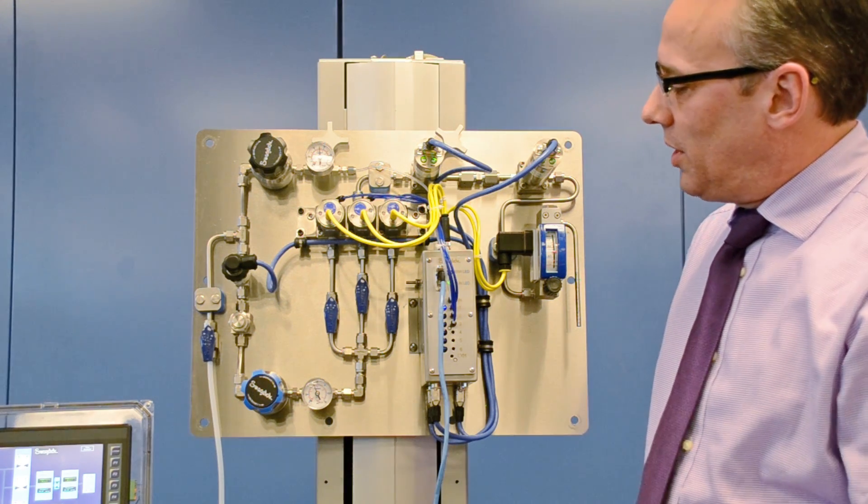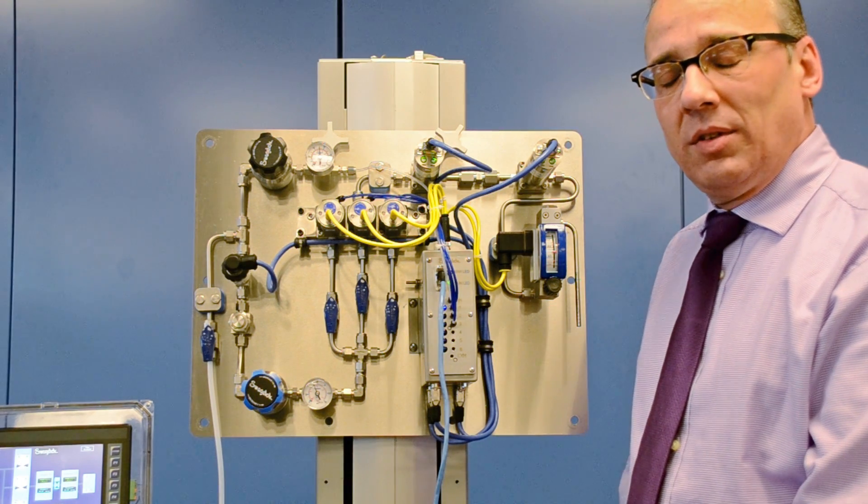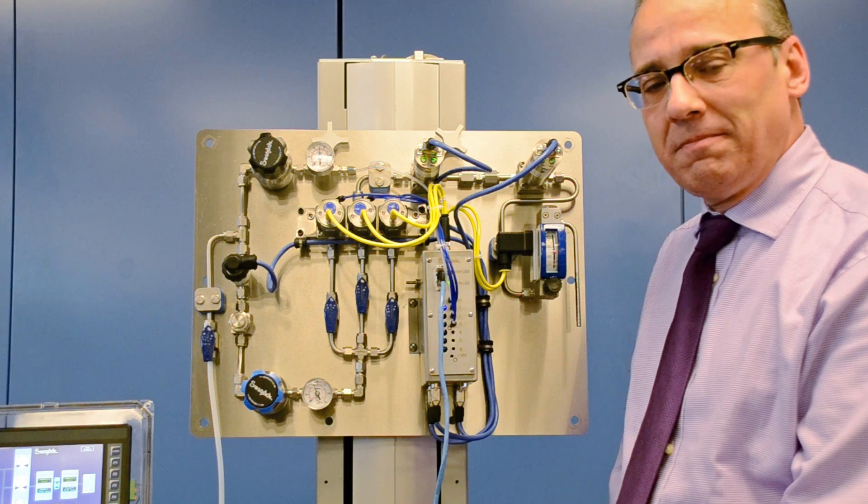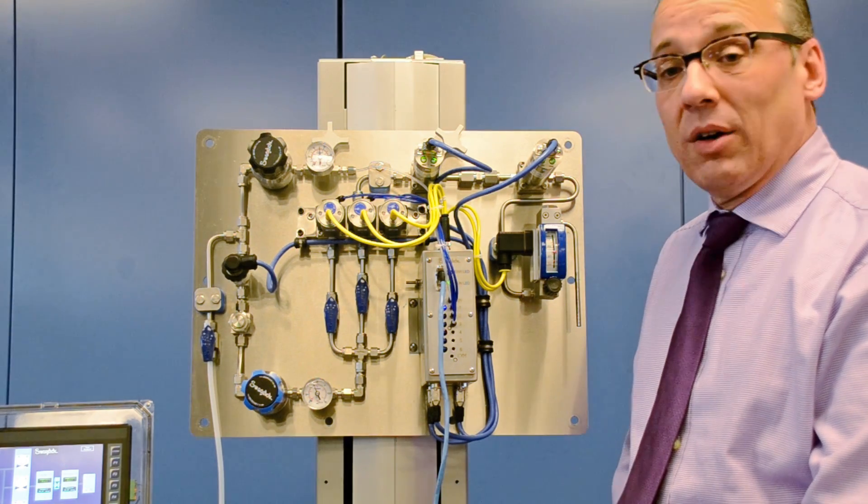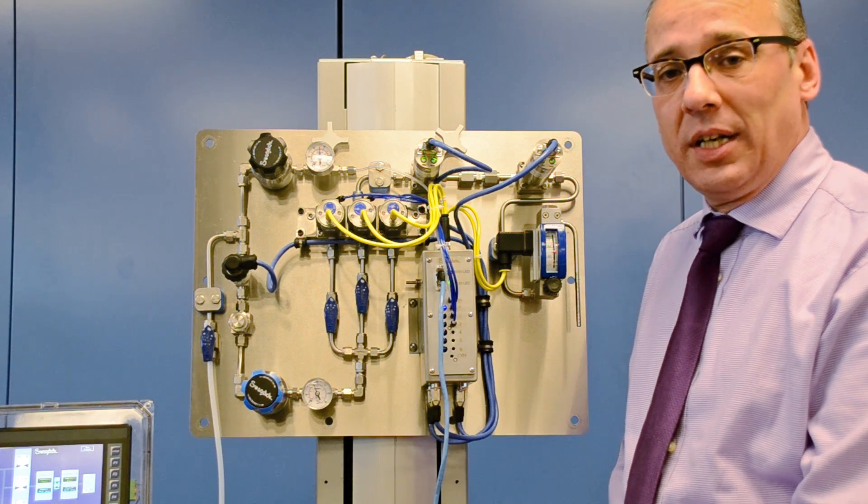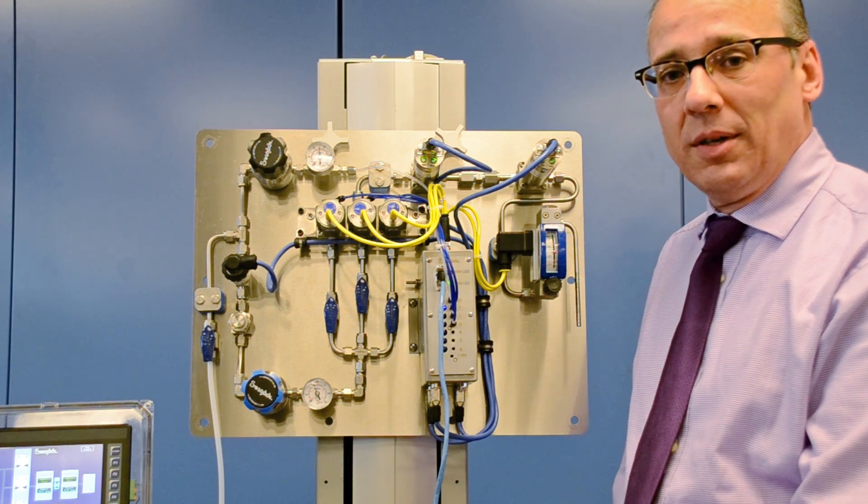As you can see in this system there are some wires. That's not traditional with the Swagelok system, but when you automate a system you need to have some connectivity to it to provide power for sensors and to provide communication to acquire the data and make it available to your network.